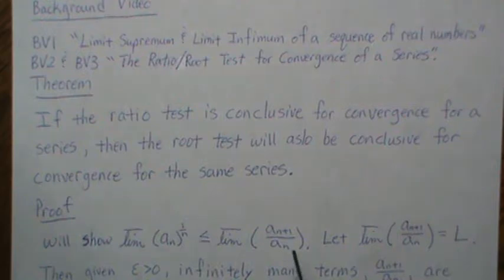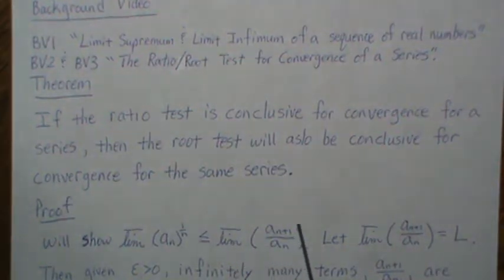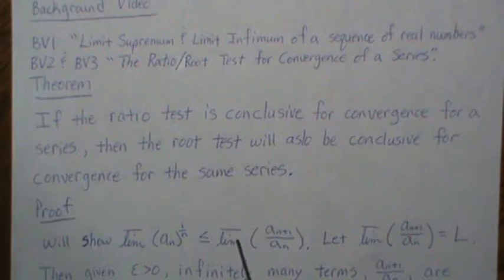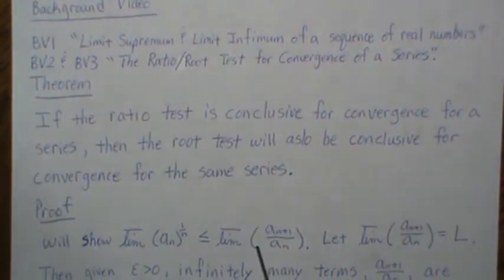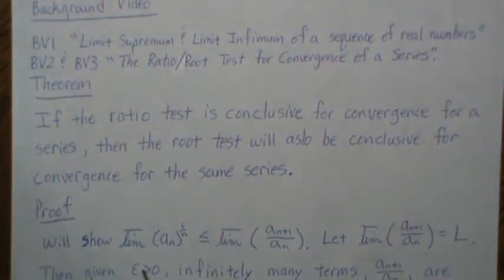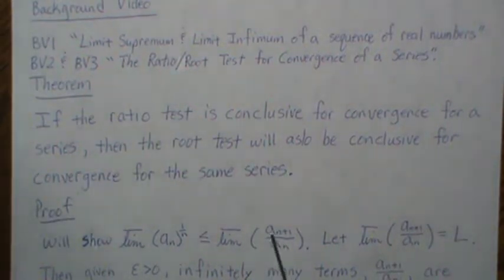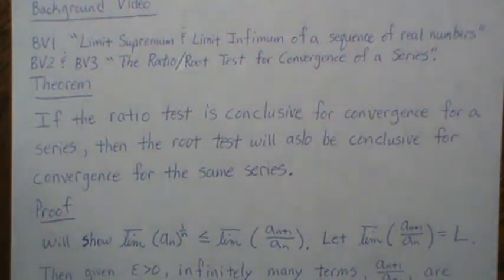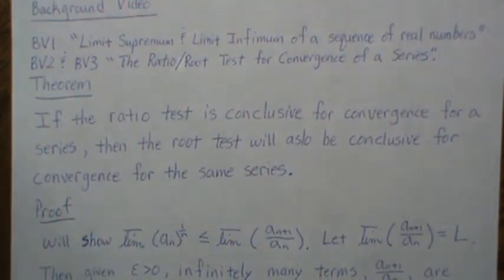What that means is: if the limit supremum of the ratio is less than one, the root test says the series is convergent. It also says that the nth root term is convergent because it's less than one. So if the ratio side indicates convergence, the root test side does too. That's only half the theorem we're going to prove, but that's step one.